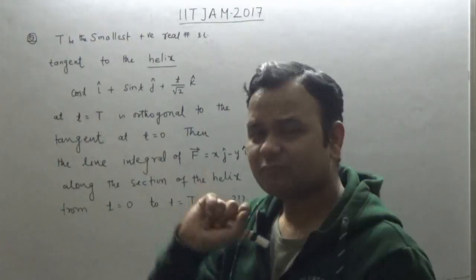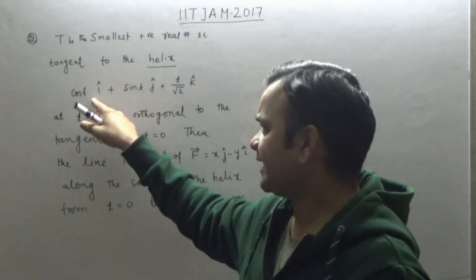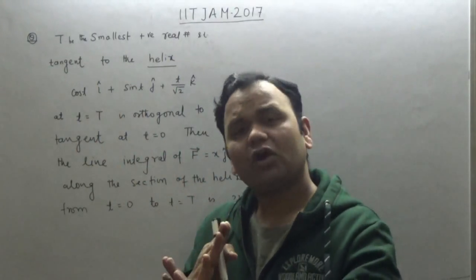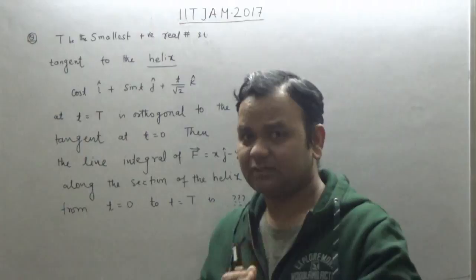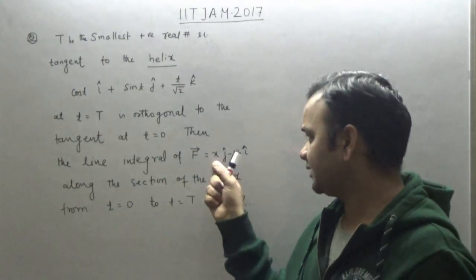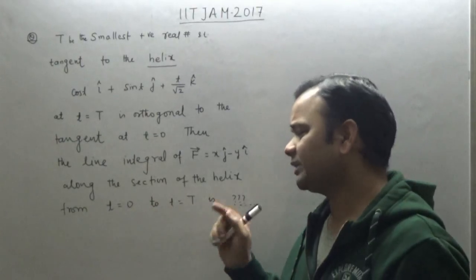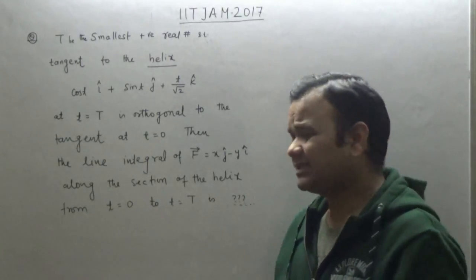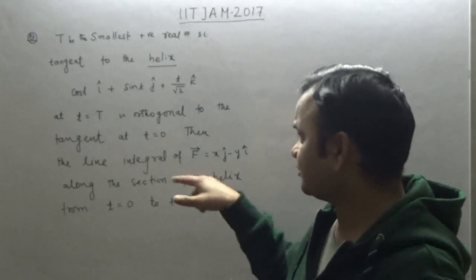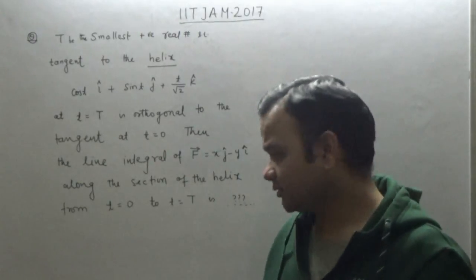So capital T is the smallest positive real number for which the tangent at t equal to capital T and the tangent at t equal to zero are orthogonal. Then the line integral of f along the section of the helix from t equal to zero to t equal to capital T is what we need to find. This is a numerical answer type question, so first we find capital T.